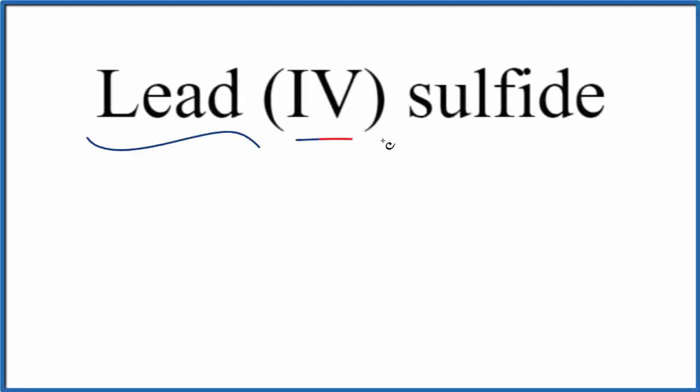To write the formula for lead-4-sulfide, the first thing we'll do is write the element symbol for lead, that's Pb.